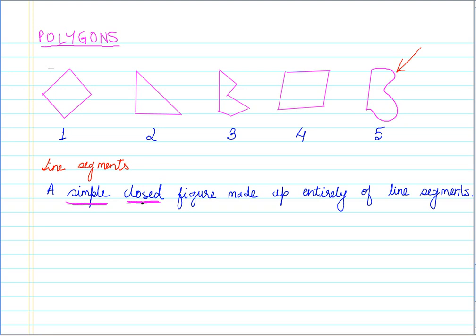Closed means that you have an interior and an exterior which is separated by a clear cut boundary. Okay? And the third thing is made up entirely of line segments. So these are the three important characteristics of polygons: they are simple, closed, and made up entirely of line segments.